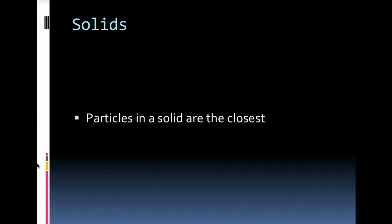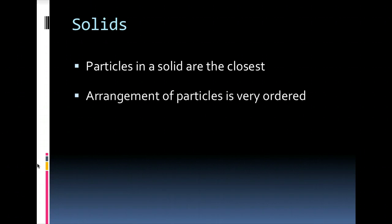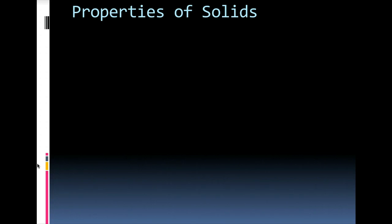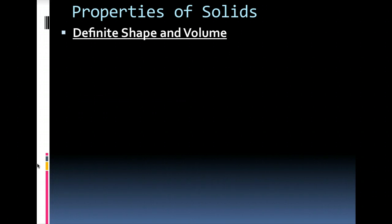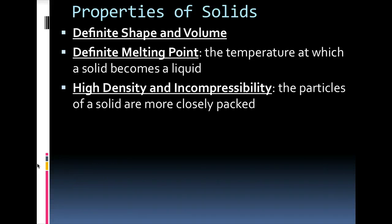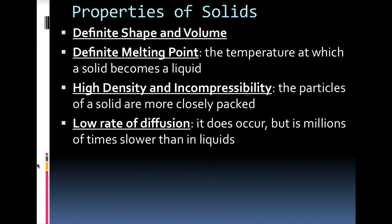Now to move on to solids. Solids particles are the closest together. They're very tightly arranged and organized. They just kind of have a tendency to vibrate back and forth. They can't really move past one another. And some properties of solids are that they have a definite shape and volume. So they hold their own shape, and they have a consistent volume. They have defined melting points, and that would be the temperature at which the solid will change into the liquid. They have high density and high incompressibility. They're definitely more dense. They have a lot of mass and a small amount of space. You can't put those particles any closer together so they're incompressible. They have a low rate of diffusion. They're not going to mix together very easily.